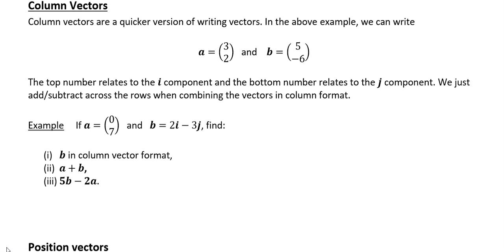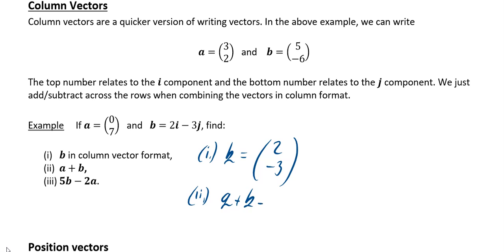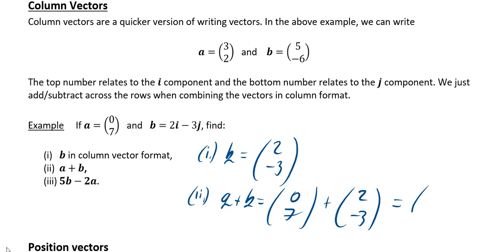In this example, if a is equal to the column vector (0, 7) and b is equal to 2i minus 3j, find b in column vector format. b in column vector is just (2, -3). Then we have to find a plus b. Writing them out in column vectors, you just add the top row and the bottom row. So the top row is 0 plus 2, giving 2, and the bottom row is 7 minus 3, giving 4.